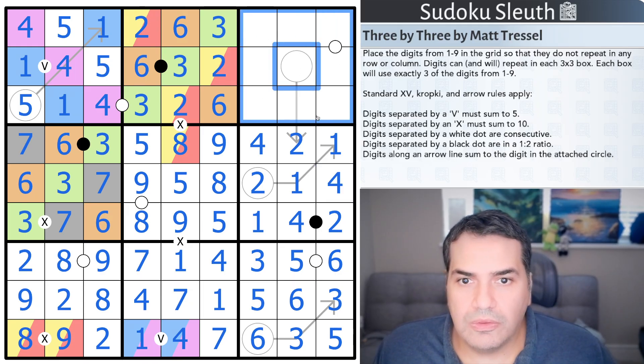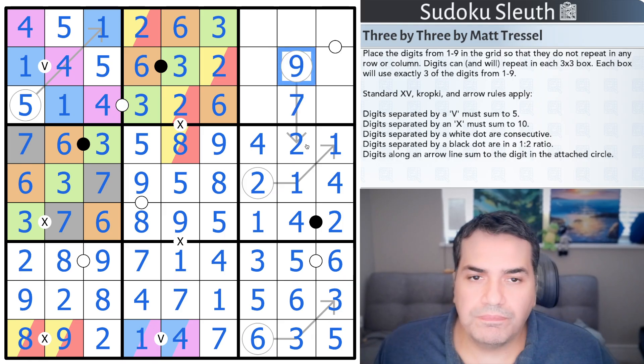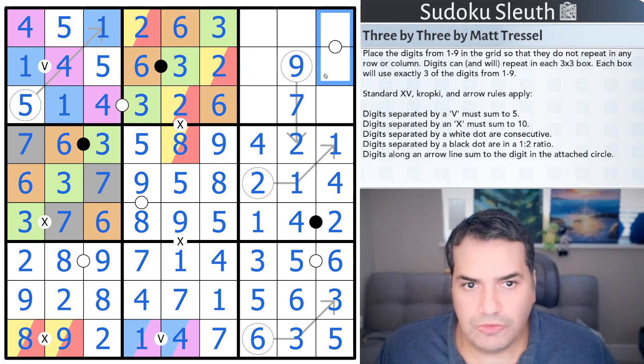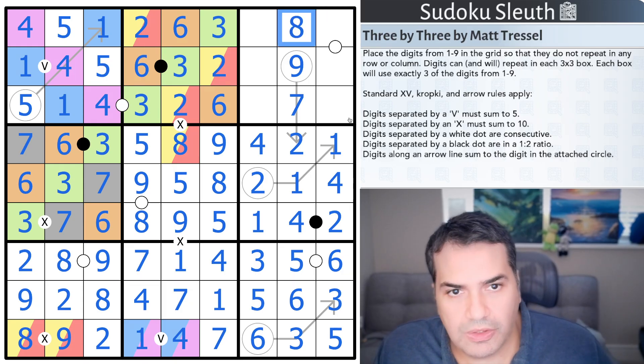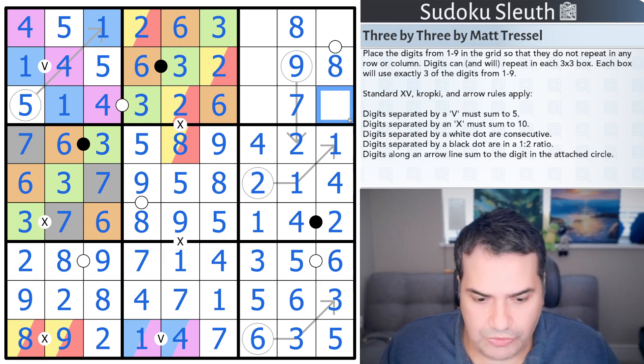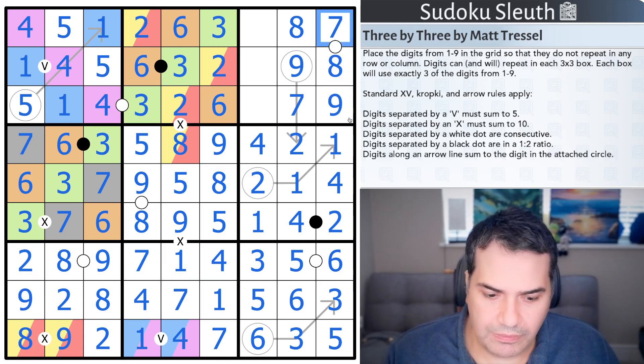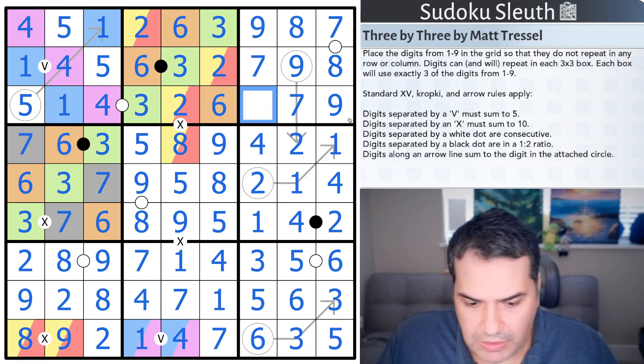Last box now. We are at 7, 8, and 9. 2 plus 7 makes 9. Need to have an 8 consecutive with either 7 or 9 in here. Actually, let's just put the 8, which gives me an 8 in here, which means, all right, this is a 9, obviously just Sudoku. 7, 9, 7, and 8 for the finish.